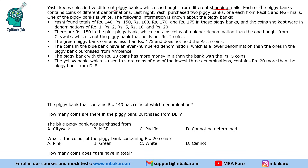We have piggy banks, shopping malls, and each of the piggy banks contains coins of different denominations. The third parameter is denominations. She purchased two piggy banks, one each from Pacific and MGM malls, and one of the piggy banks is white. So we have four parameters: piggy bank color, shopping mall, denomination, and the amount in them.